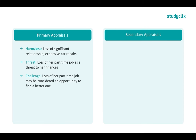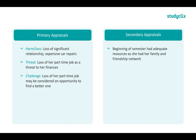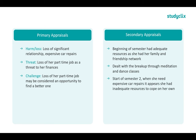Moving on to her secondary appraisals, this requires more detailed analysis comparing semester 1 to semester 2. In semester 1, she had adequate resources to cope — she had her family and friendship network, which was quite enough and she wasn't really that stressed. With her breakup, these resources began to falter a little, but she did get through it as she had medication and dance classes. At the start of semester 2, when she needed expensive car repairs, it appears she had inadequate resources to cope on her own.